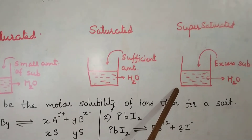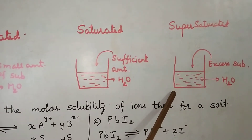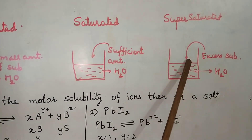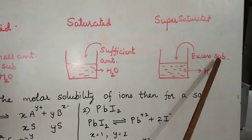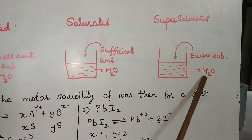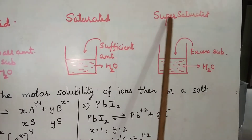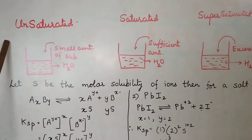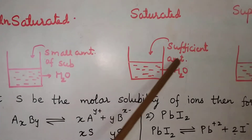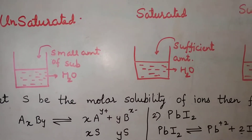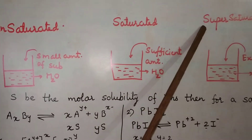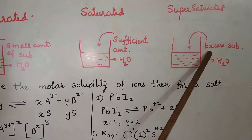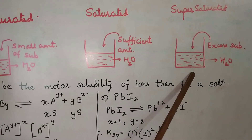And what is a supersaturated solution? Consider a saturated solution — if you add even more substance into it, that extra substance cannot dissolve in water. That solution is called a supersaturated solution. In unsaturated solution, the amount of substance is very small; in saturated solution, the amount is sufficient; and in supersaturated solution, you add excess substance beyond saturation.